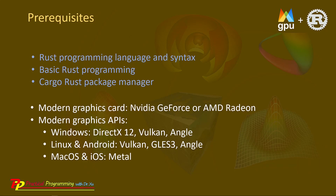On the hardware side, in order to run a WGPU application on your local machine, your machine should have a modern graphics card such as an Nvidia GeForce or AMD Radeon graphics card. These modern graphics cards should also support modern graphics APIs. For Windows, for example, you should have DirectX 12, Vulkan, or ANGLE. For Linux and Android, you should have Vulkan, OpenGL ES 3, or ANGLE. For Mac OS and iOS, you should have the Metal graphics API.